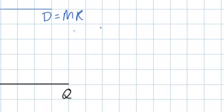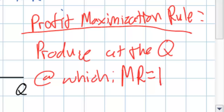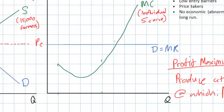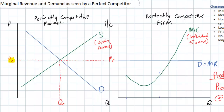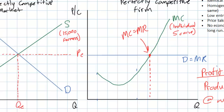The next question is: what is the optimal quantity of milk for an individual dairy farmer to produce? We're going to introduce the profit maximization rule. In order for a firm to maximize its profits in the short run, it should produce at the quantity at which the firm's marginal revenue equals its marginal cost. Looking at our graph, the profit-maximizing quantity is at the intersection of MC and MR — the firm will wish to produce milk up to this quantity, which we'll call QPM, but not beyond.